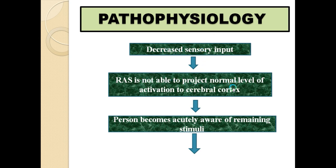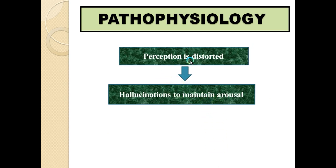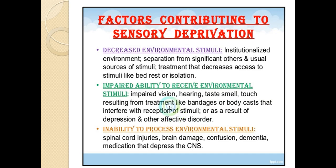This is the pathophysiology: there is decreased sensory input, so the RAS is unable to project a normal level of activation to the brain. The person then becomes acutely aware of any remaining stimuli — for example, in a quiet room with only a ticking clock, the person will be very focused on that sound. Perception is distorted, and the brain produces hallucinations to maintain arousal.